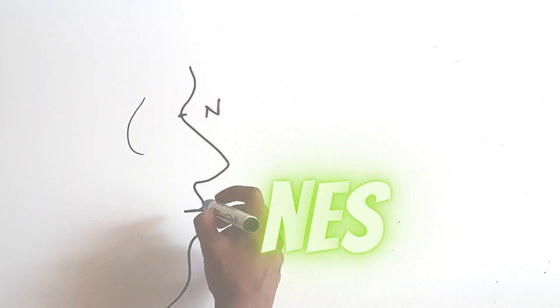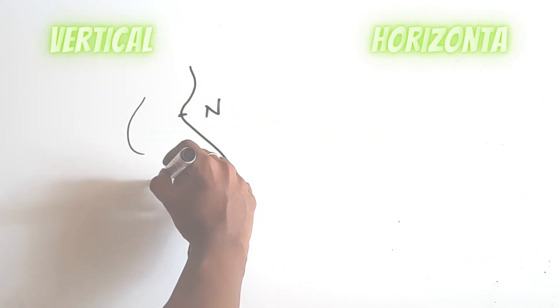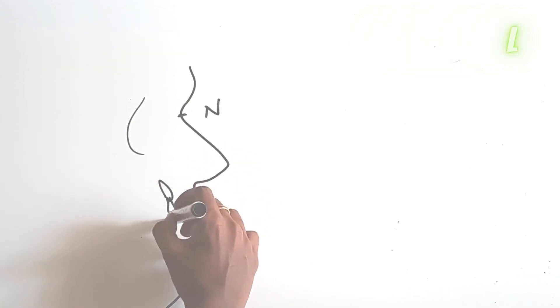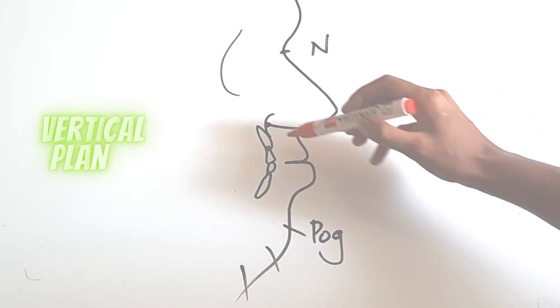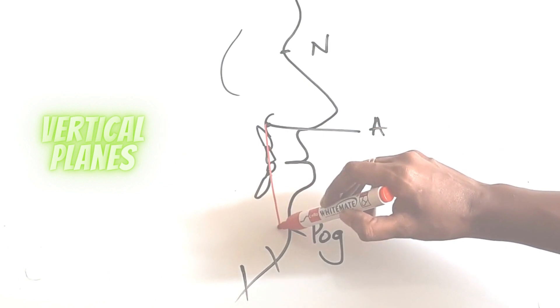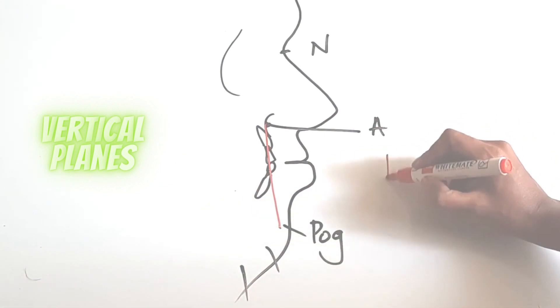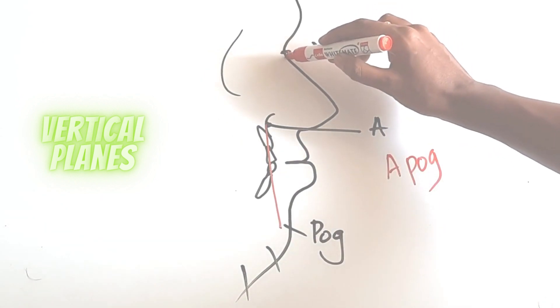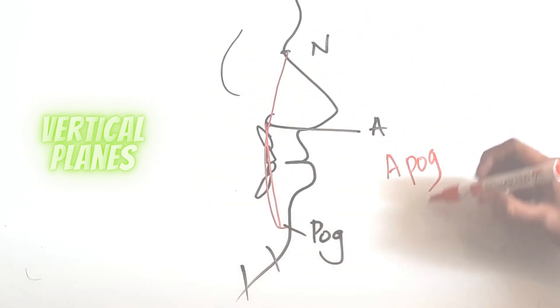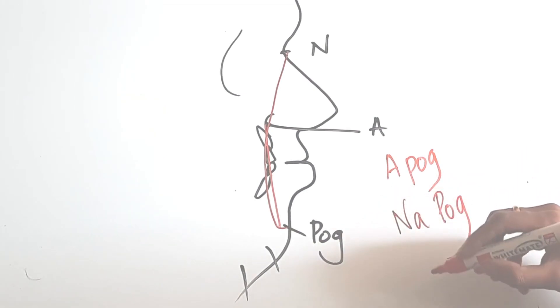Now, let's look at the planes in cephalometry. They are vertical and horizontal planes. First, let's see the vertical planes. First one is from point A to pogonion and it's called APOG. The second one is from nasion to pogonion, NAPOG, and it is also called the angle of convexity.